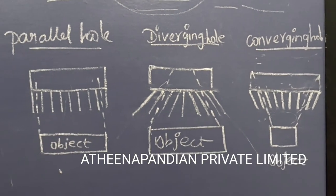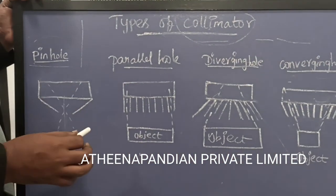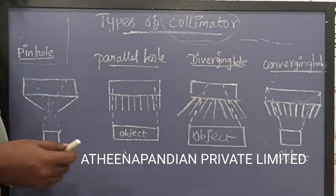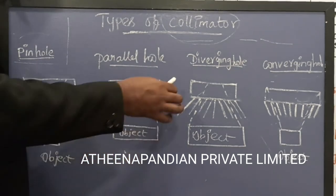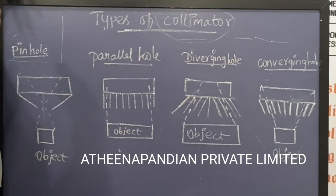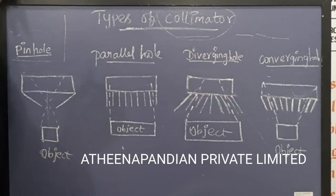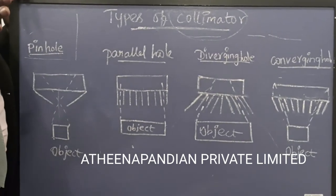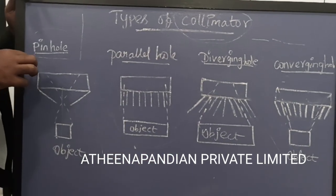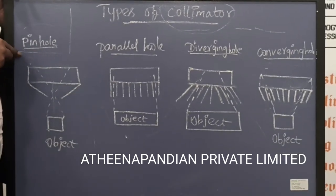So in summary: pinhole, parallel hole, divergent, and convergent — each is used according to the purpose. If high intensity is required in a focused area, the convergent is more preferable. If the whole body, abdominal region, or chest region needs to be scanned, go for the divergent. The parallel hole is used for something like the spinal cord, where each disc needs to be imaged. And for a small area like a finger, you go for the pinhole collimator.